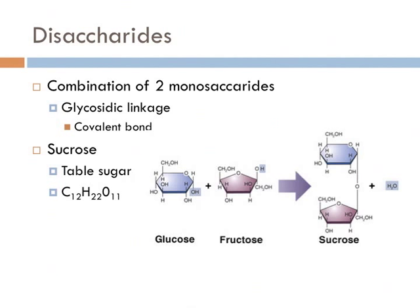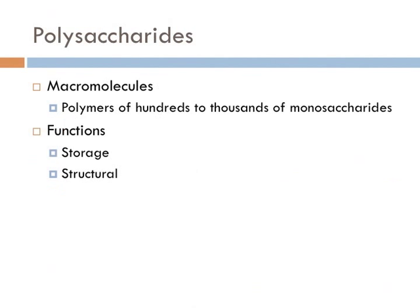Disaccharides are two monosaccharides combined by a covalent bond known as a glycosidic linkage. Sucrose is the classic example of a disaccharide. It is made up when a glucose molecule bonds with a fructose molecule, forming a glycosidic linkage between them, and also a water molecule.